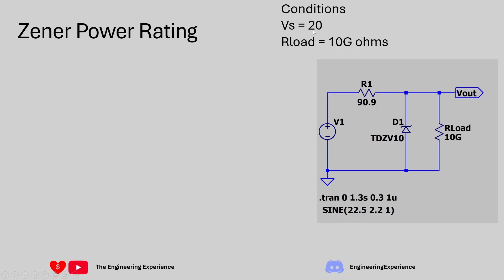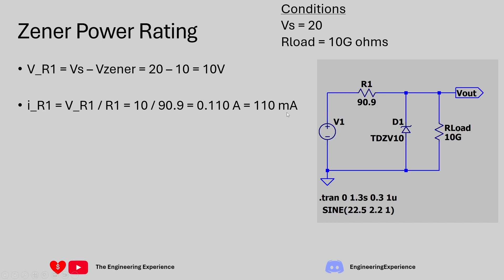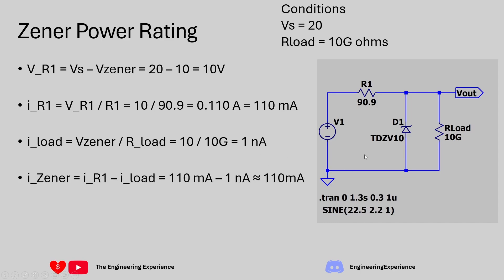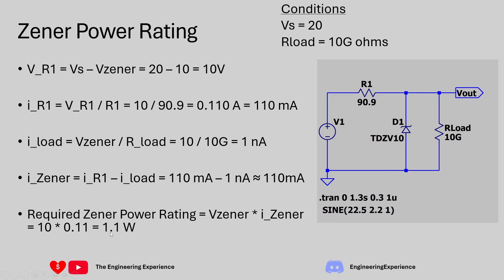Condition 3: Vs = 20 volts, no load - I've used 10 gigaohms, essentially not connected. With 20 volts supply and 10 volts across the Zener, there's 10 volts across R1, giving a current of 110 milliamps. With 10 volts on Vout and a 10 gigaohm load, the load current is negligible. So all 110 milliamps flows through D1, giving a required power rating of 1.1 watts. This is the highest power rating so far.